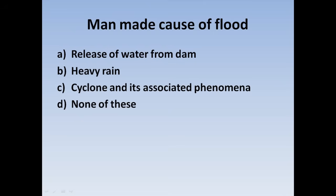Next question: What is the man-made cause of flood? Option A: Release of water from dam, Option B: Heavy rain, Option C: Cyclone and its associated phenomena, Option D: None of this. Heavy rain and cyclone are natural causes. Release of water from a dam is a man-made cause of flood. Correct answer: Option A.